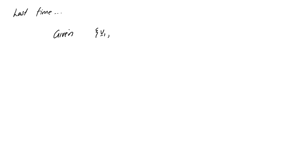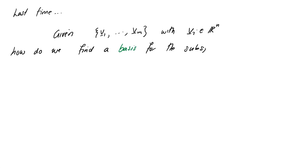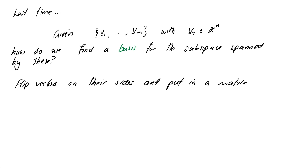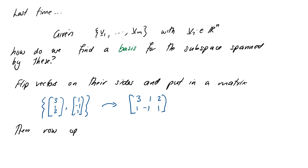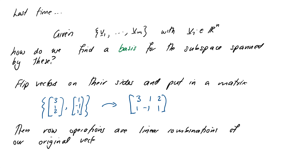At the end of the last video we posed the problem: given a set of vectors v1, v2 through to vm, find a basis - a minimal set that spans the subspace that these vectors themselves span. We started talking about the idea of sticking our vectors into the rows of a matrix, because when we do elementary row operations it's like we're taking linear combinations of those vectors.